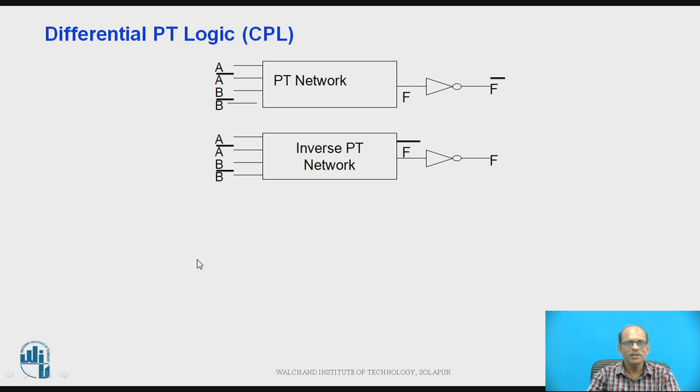Now next type of configuration is differential pass transistor logic that we call it as CPL, complementary pass transistor logic. Now for this CPL, the original inputs and complement of the original inputs are used as shown in the figure. So A A bar B B bar. So this is pass transistor network and this is inverse pass transistor network. So the output is F and here it is F bar. And if this output is passed through inverter, then F will become F bar and F bar will become F as shown in the figure.